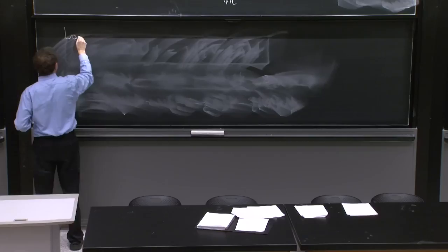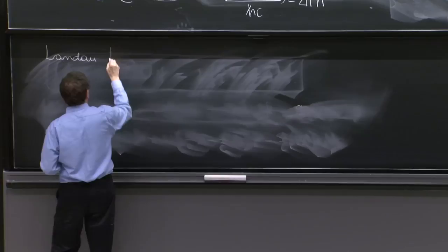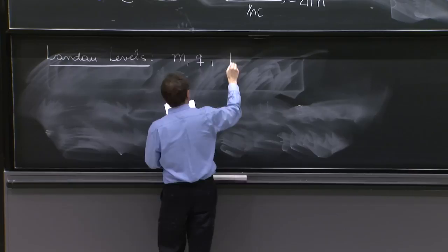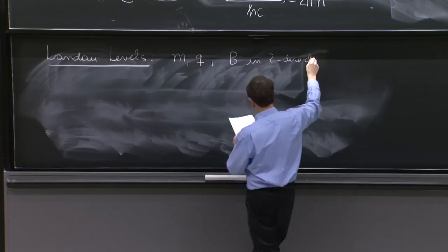So it's the problem of solving for the motion of an electron in a magnetic field. It's called Landau levels for the physicist Lev Landau from Russia that discovered or did this calculation first. So you have a mass m, charge q, and a magnetic field b in the z direction.